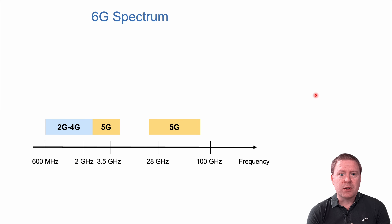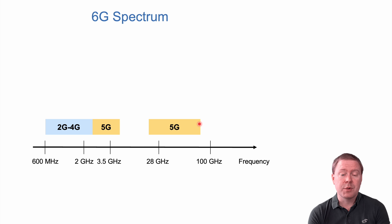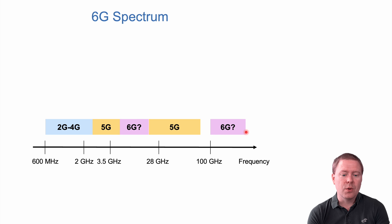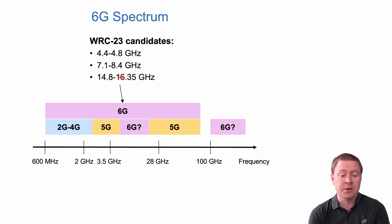Finally, 6G spectrum — what frequency ranges will 6G utilize? Looking at today's usage: 2G, 3G and 4G are typically between 600 MHz and 2.5 GHz. 5G was designed for two new bands — one around 3 GHz up to 7 GHz, and one called millimeter wave from 24 GHz up to around 75 GHz. There are thus some wide spaces, both between the two 5G bands and above in what is known as sub-terahertz or terahertz. The new bands being considered for 6G at the next World Radiocommunication Conference are around 4.6, 7.8, and 15 GHz — in the range between the two 5G bands.